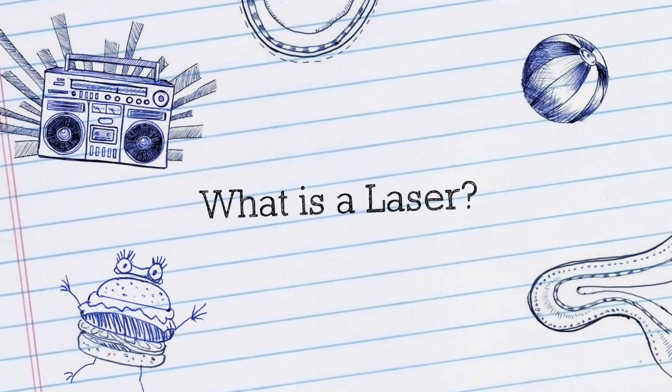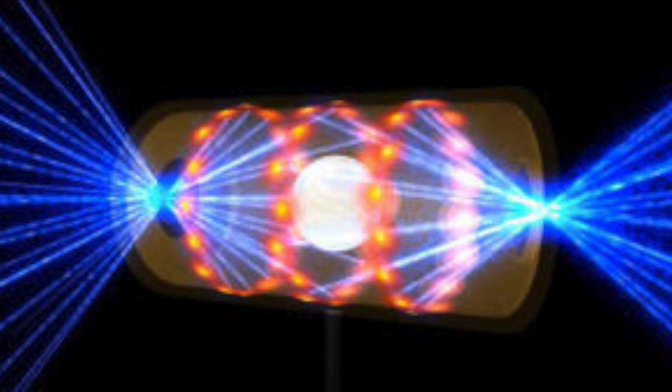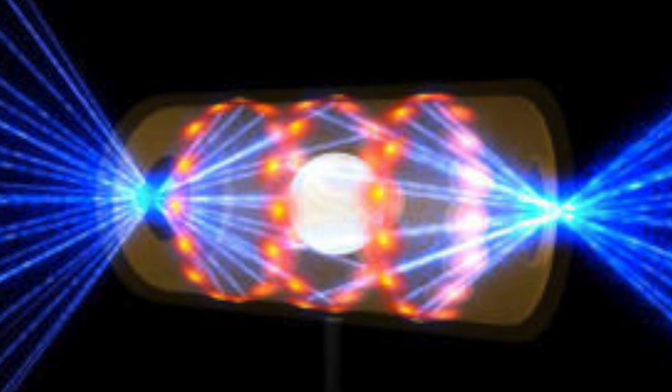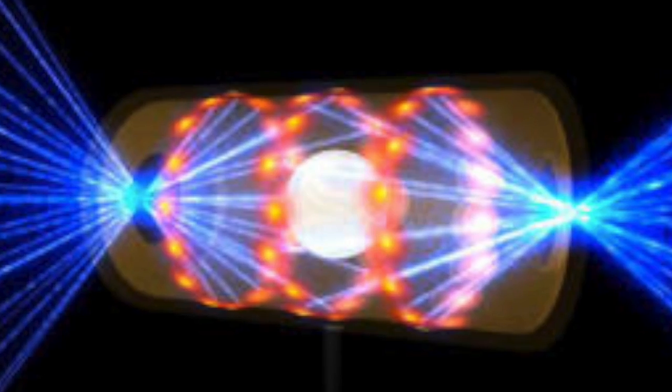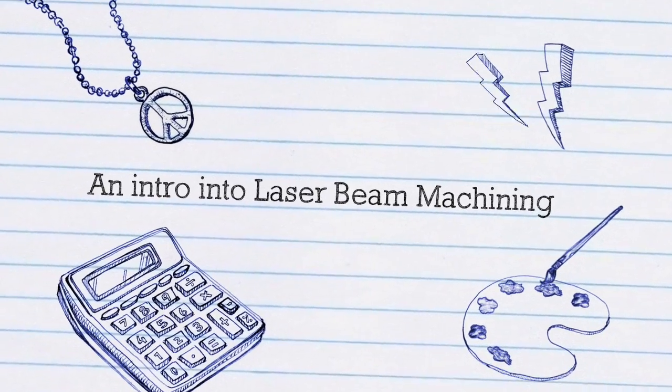First, we might ask ourselves, what is a laser? A laser is a device that emits light through a process of optical amplification based on the stimulated emission of electromagnetic radiation.